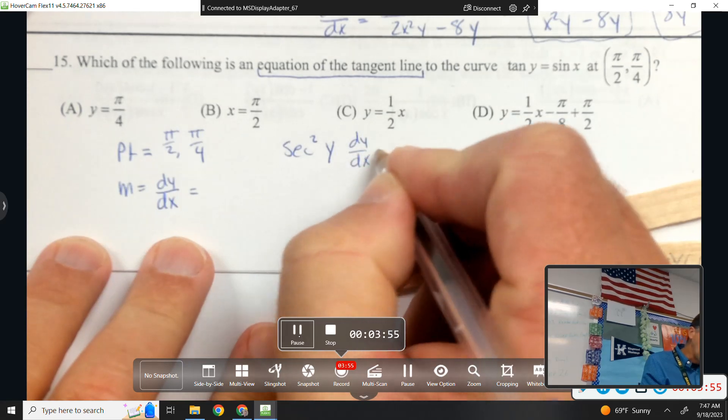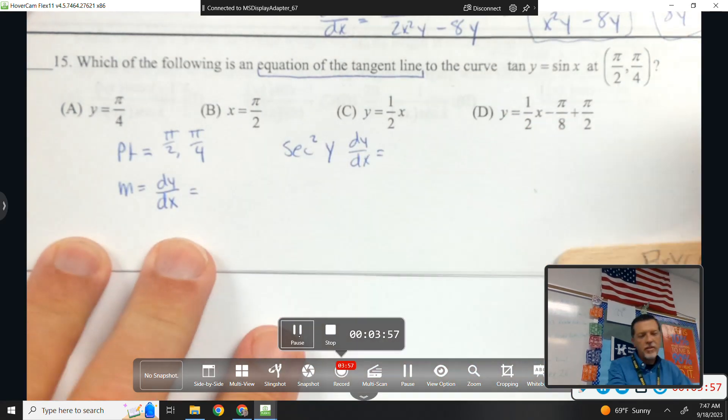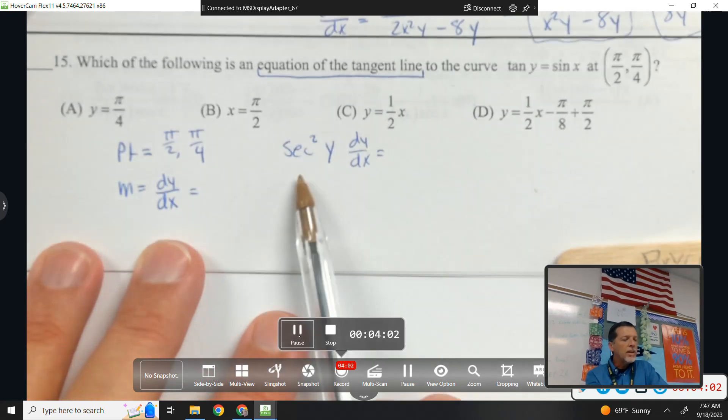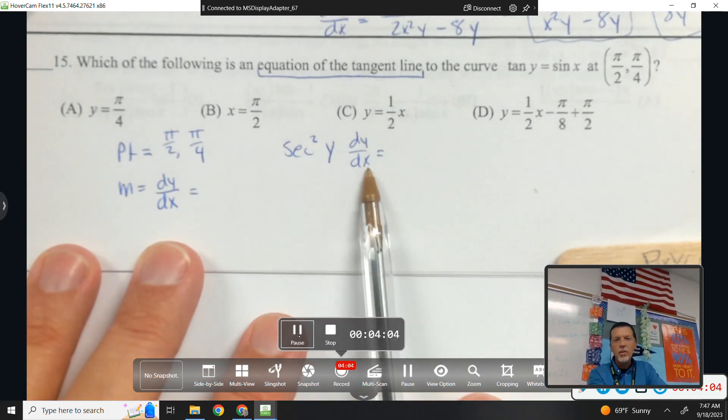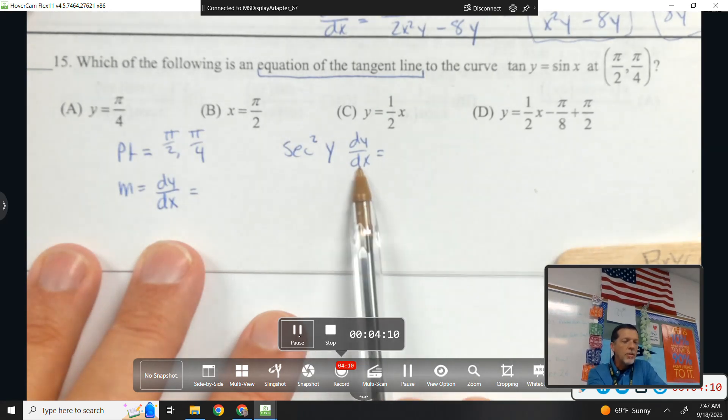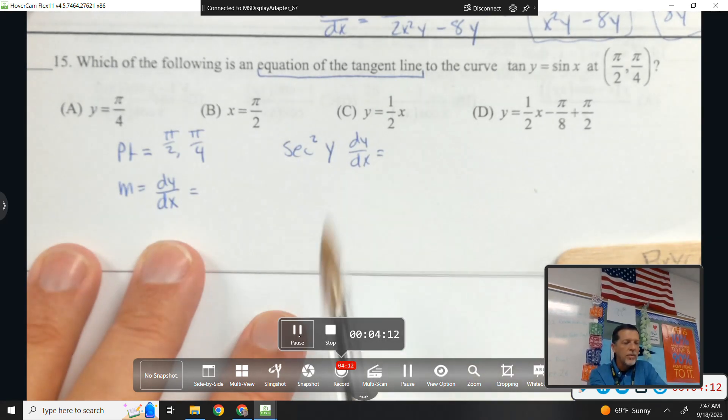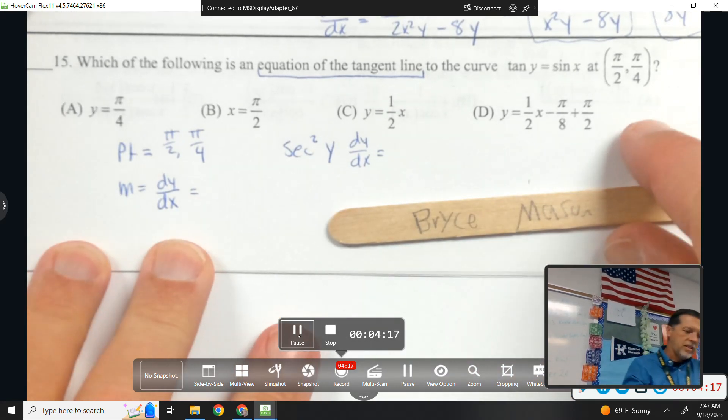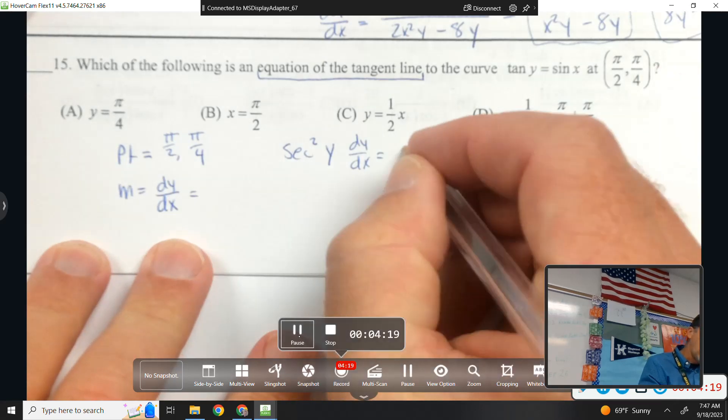So be careful. I know when you memorize the derivative of tangent, your brain just thinks, derivative of tangent, secant squared. And that's fine. But secant squared of the argument times the derivative of the argument. That's a lot to say every time, so we never say that. But we need to make sure we get the argument and the derivative of the argument. How about the derivative of sine of x? Cosine of x.